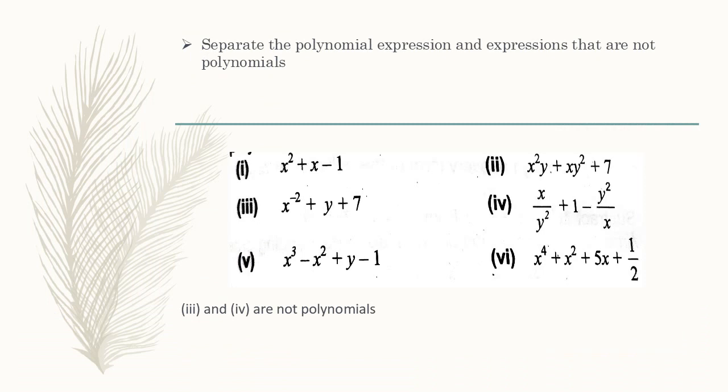Separate the polynomial expressions and expressions that are not polynomials. Here, we have 6 expressions. All are polynomials. But third and fourth are not polynomials because they have exponent which is minus 2. And again, in fourth one, x over y square. If we replace y square above, then the exponent again minus 2. Exponent means power. So these 2 are not polynomials. Other than all are polynomials.